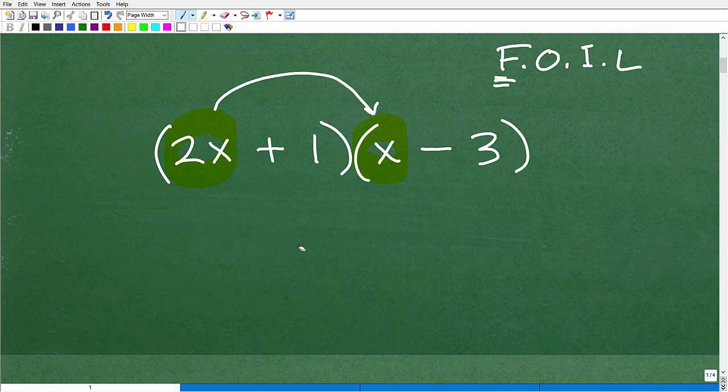So you need to understand what is two X times X. So obviously, hopefully, you know, that is going to be two X squared, two X squared, right? If you didn't know that, then you got to work on your powers. So that is the F part of the FOIL method. No big deal.